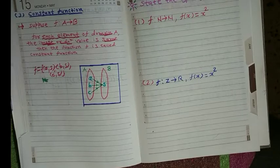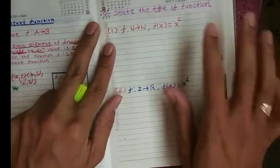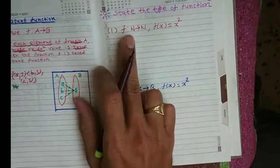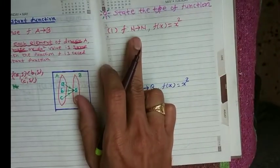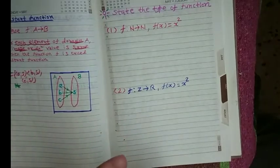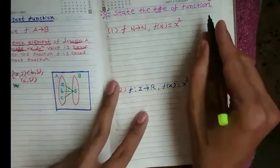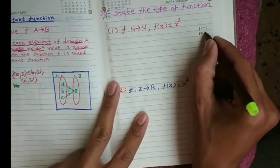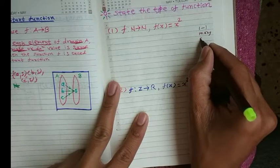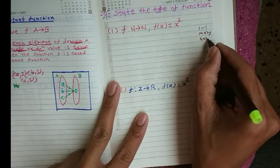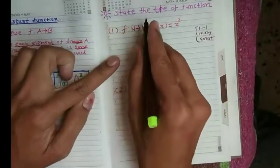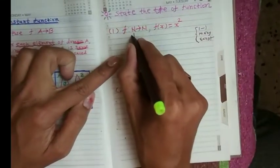Now let's discuss some examples. State the type of function: first, f: N → N, f(x) = x². Is it a one-one function, a many-one function, or a constant function? We need to check. Here the domain is N.